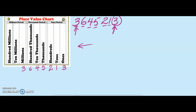Now let us examine where each digit was placed. My 3 was placed into my 1s, so the place value of the 3 is 1s. The place value of my 1 is going to be 10. The place value of my 2 is going to be 100. My 5: 1,000. My 4: 10,000. My 6: 100,000. And my 3: million.